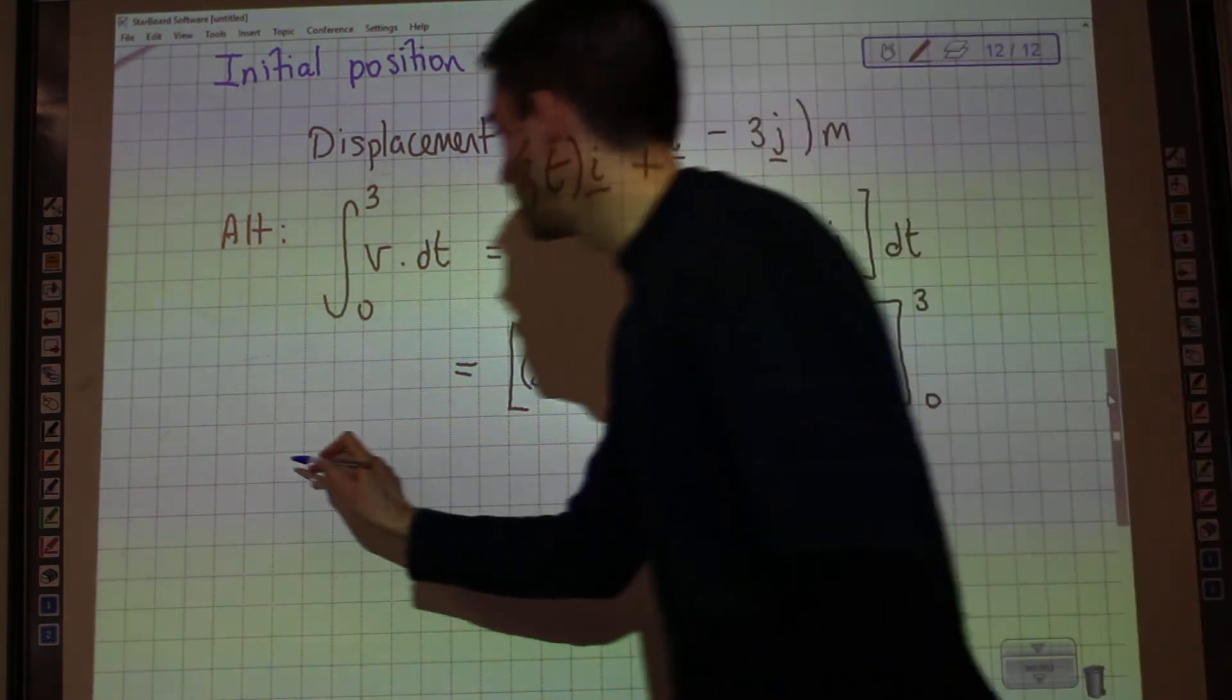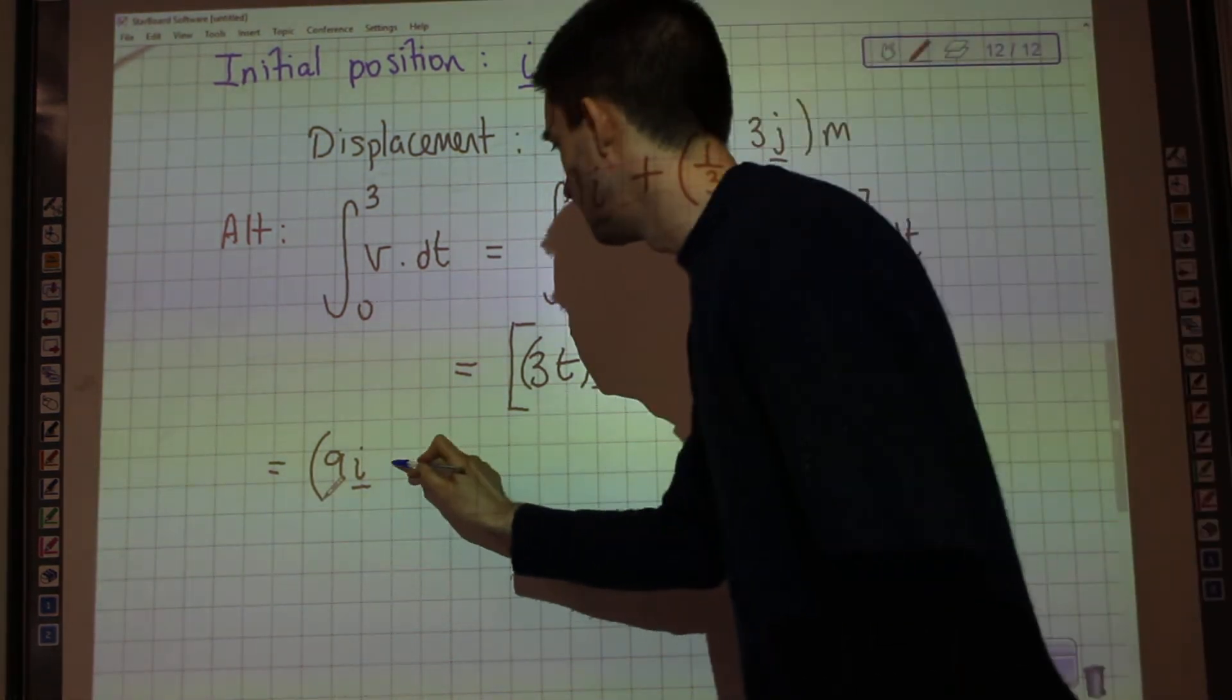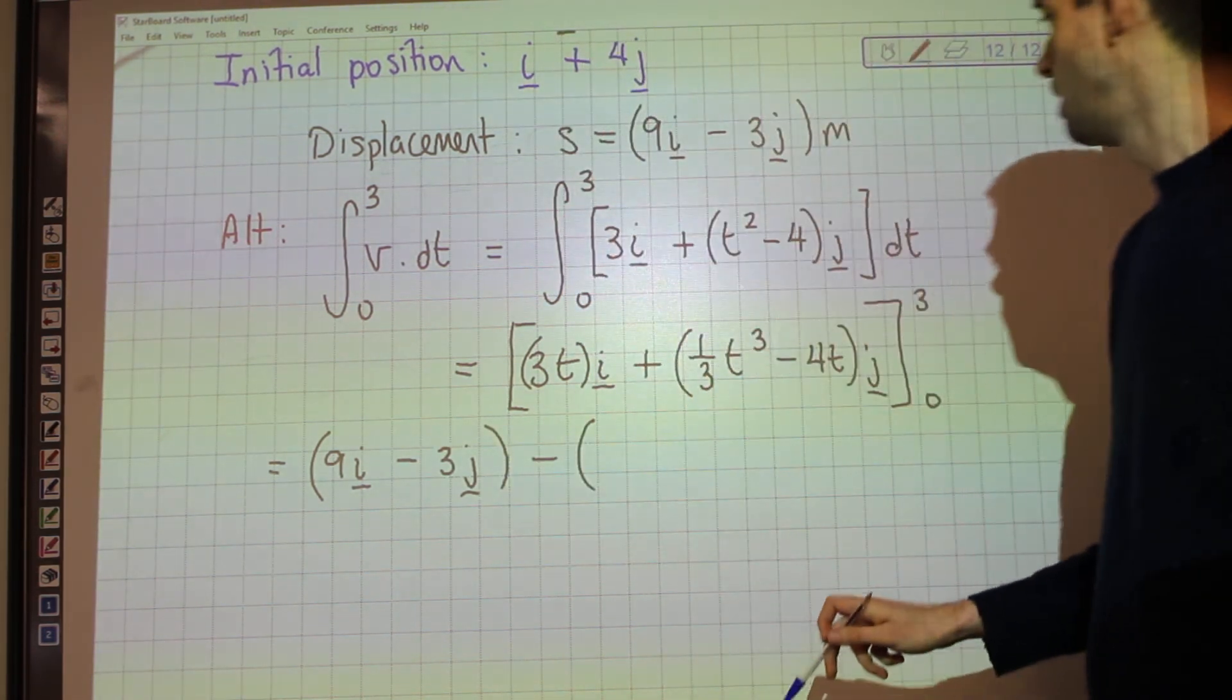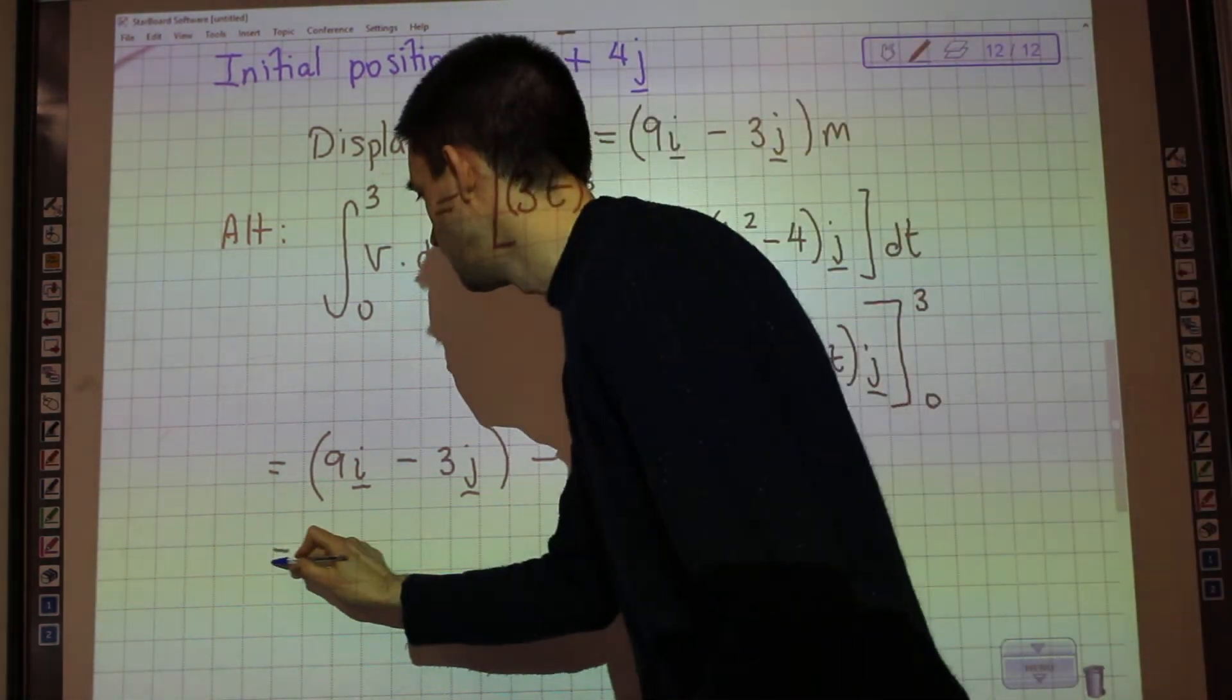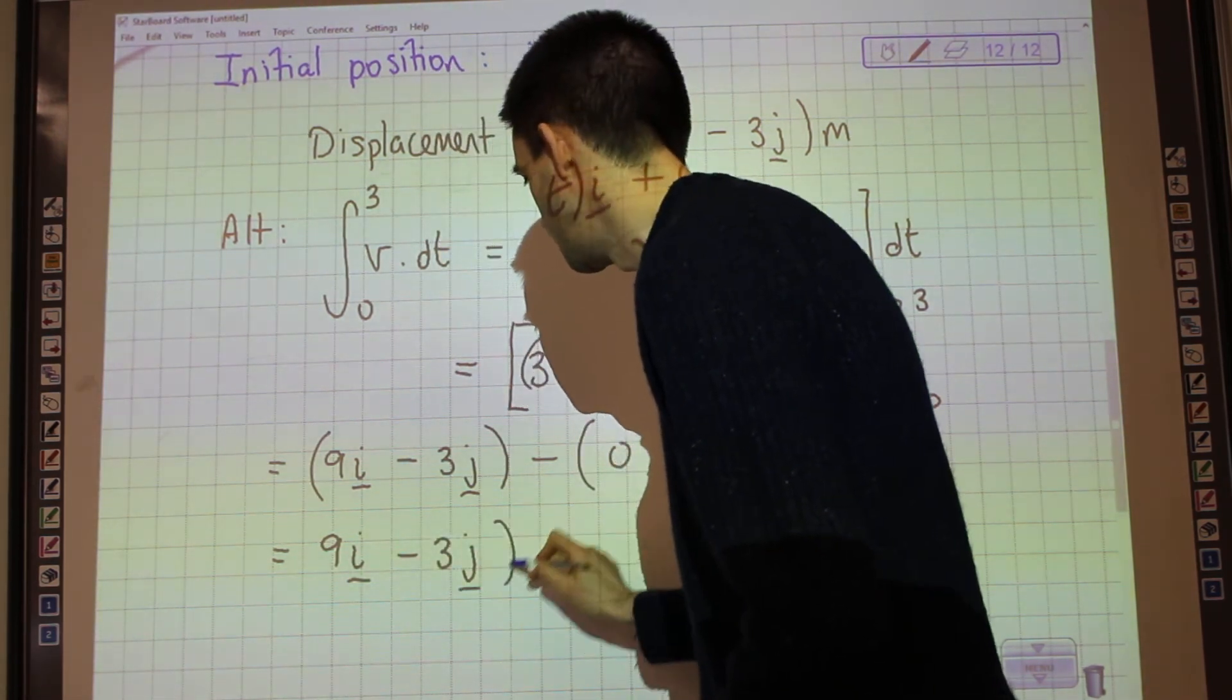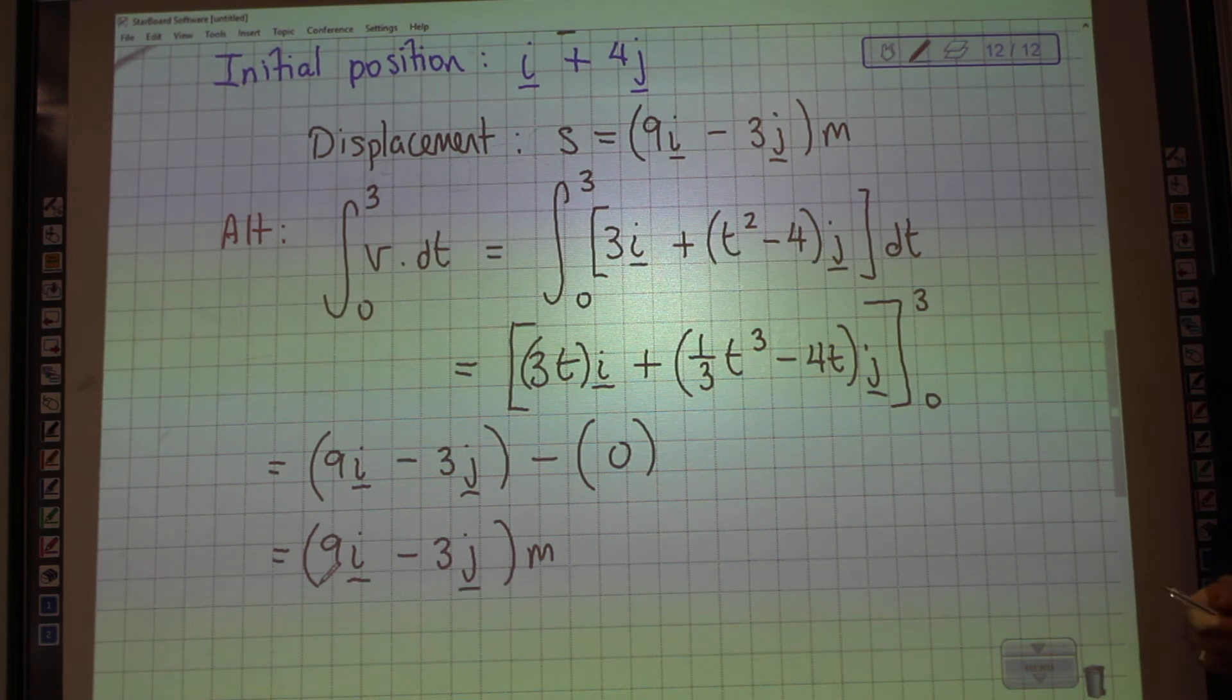So, if we substitute in 3, we'd get 9i. Substitute 3 into here, we're going to get negative 3j. And if we substitute in 0, we're going to get 0 from both components. So, you can see that what we've arrived at is 9i minus 3j meters. Which is the displacement in the first three seconds. So, how far it's gone in relation to where it started.